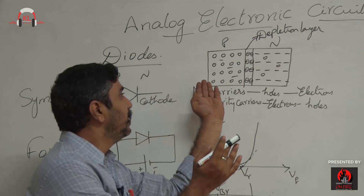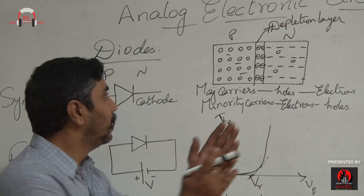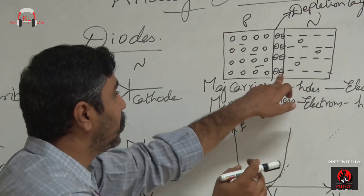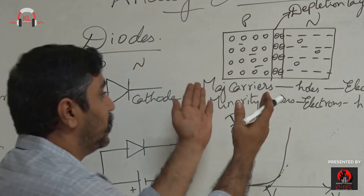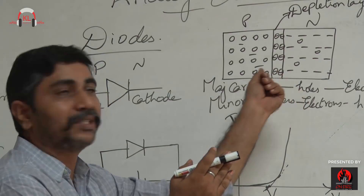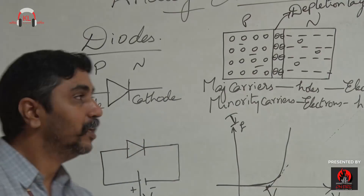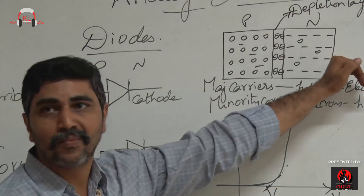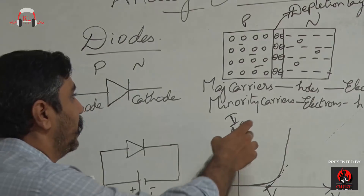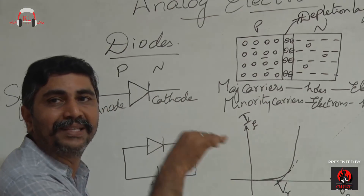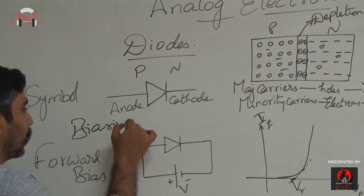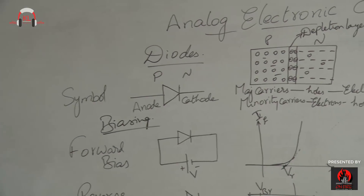For holes and electrons to recombine further, they must cross the depletion region, which we also call the potential barrier. The available energy is not sufficient, so we must apply some external force — biasing. There are two biasing methods: forward bias and reverse bias.